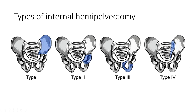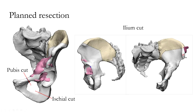After discussing the case in the sarcoma tumour board, the patient was planned for type 2 internal hemipelvectomy. The planned cuts included a pubic cut along the superior pubic ramus, an ischial cut, and an iliac cut which had to extend into the sciatic notch.